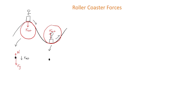At the bottom of a valley, gravity still pushes down, the normal force pushes back up, and the net force is pointed up toward the center of the circle. For the top of the hill, F_net = F_g - N. The force of gravity is positive because it's pointed towards the center; the normal force is negative because it points away from the center.